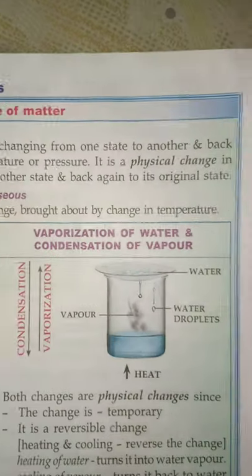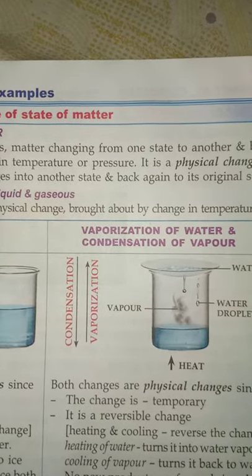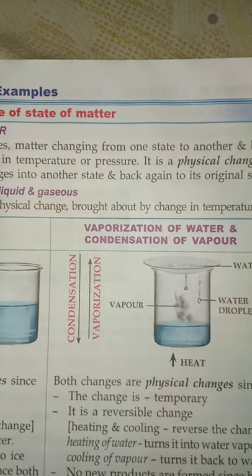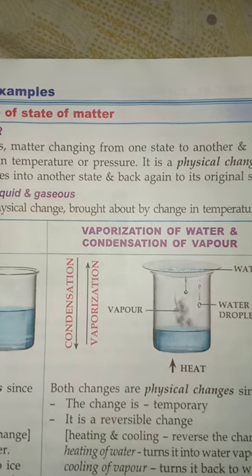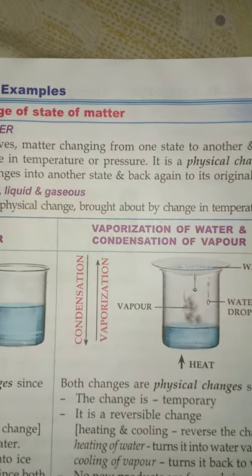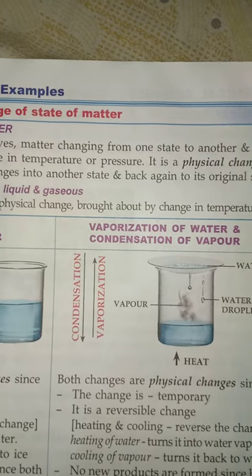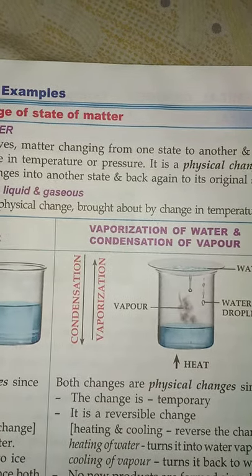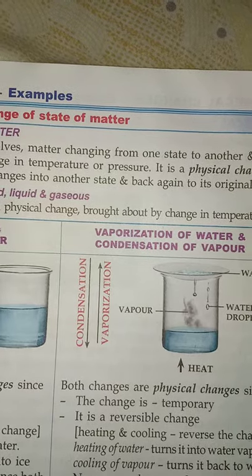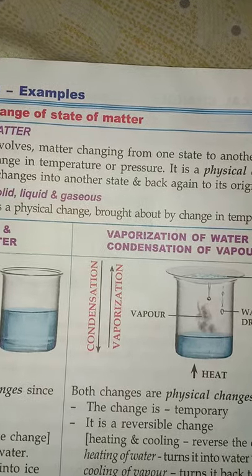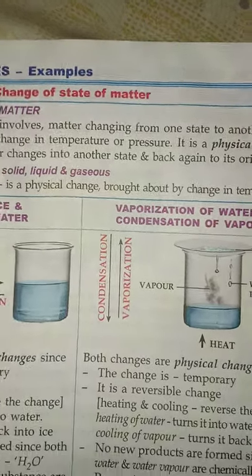The same goes for vaporization and condensation — both changes are physical. The changes are temporary and reversible. On heating you get water vapor, and on cooling the water vapor you get water again. No new products are formed and the properties of the original substance are not altered.